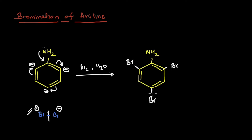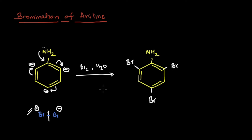But what if we want only one bromine addition? The idea is that this NH2 is activating the ring - it is sharing its lone pair, making the ring highly reactive. And also we use bromine water, so water being a polar solvent is easily helping break this bromine bond. Can we somehow modify this process so that we have only fewer bromines available?